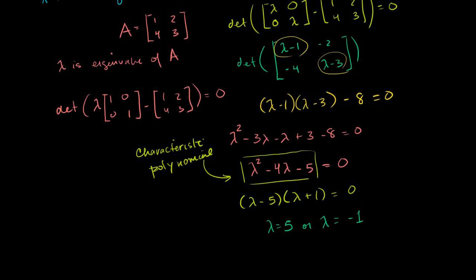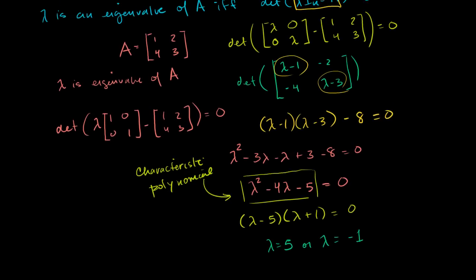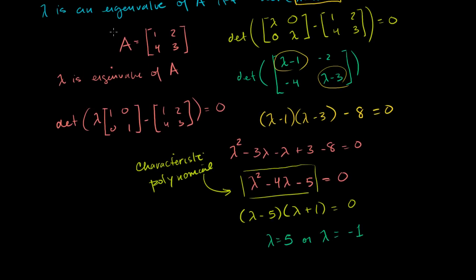So just like that, using the information that we proved to ourselves in the last video, we're able to figure out that the two eigenvalues of A are lambda equals 5 and lambda equals negative 1. Now that only just solves part of the problem, right? We know we're looking for eigenvalues and eigenvectors. We know that this equation can be satisfied with lambdas equaling 5 or minus 1. So we know the eigenvalues, but we're yet to determine the actual eigenvectors. So that's what we're going to do in the next video.